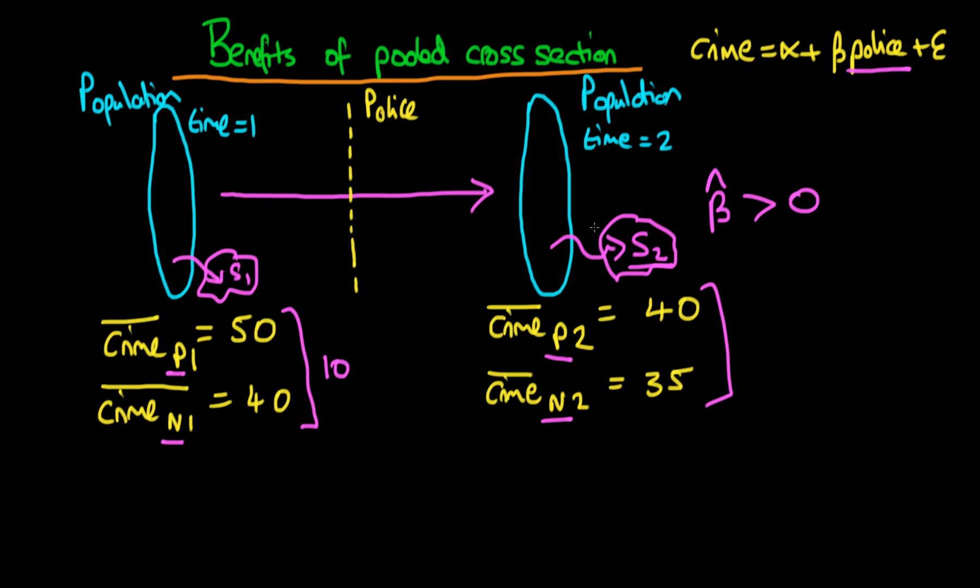So we spoke about the difference in differences estimator as being equal to 5 minus 10, which equals minus 5. So we suggested that the effect of this particular policing policy was to lower crime rates by 5 cases per 100,000 populace, for example.